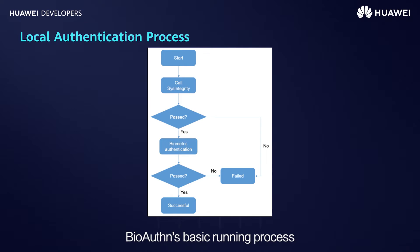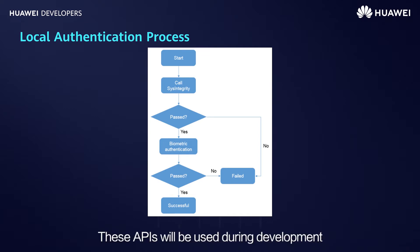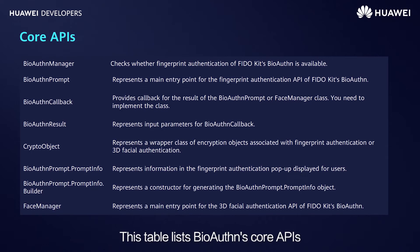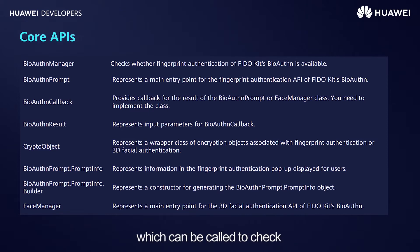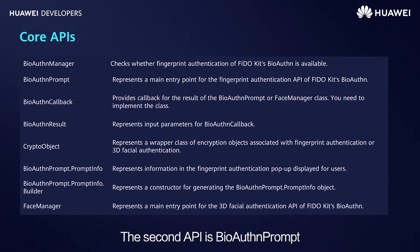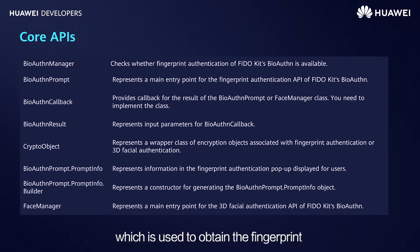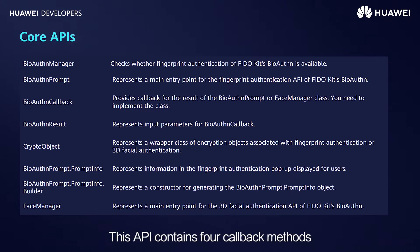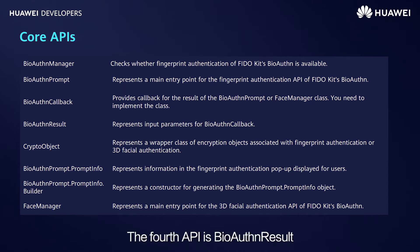You now have an understanding of BioAuthn's basic running process. Let's move on to BioAuthn's core APIs. The first API is BioAuthnManager, which can be called to check whether fingerprint authentication can be used by the current operating system. The second API is BioAuthnPrompt, the main entry point for BioAuthn's fingerprint authentication feature. The third API is BioAuthnCallback, used to obtain the fingerprint or 3D facial authentication result. This API contains four callback methods corresponding to different authentication statuses. The fourth API is BioAuthnResult, which is the input parameter of the BioAuthnCallback API.